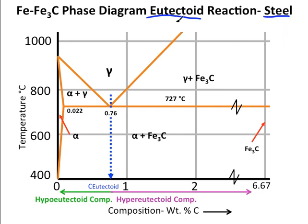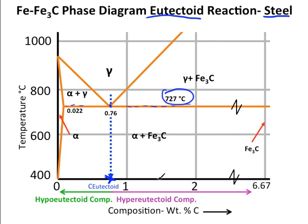The eutectoid reaction is when solid one cools into solid two plus solid three. The eutectoid temperature — the temperature at which this reaction takes place — is 727 degrees Celsius for the iron-iron carbide phase diagram. The eutectoid composition is 0.76 weight percent carbon, found where all the lines intersect. If a composition is below the eutectoid composition, we call that hypo-eutectoid; if above, we call it hyper-eutectoid.